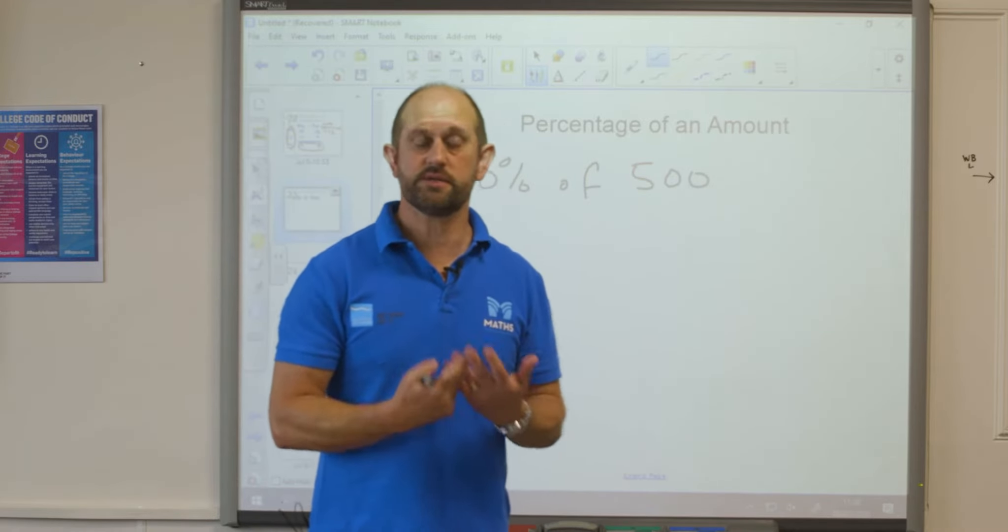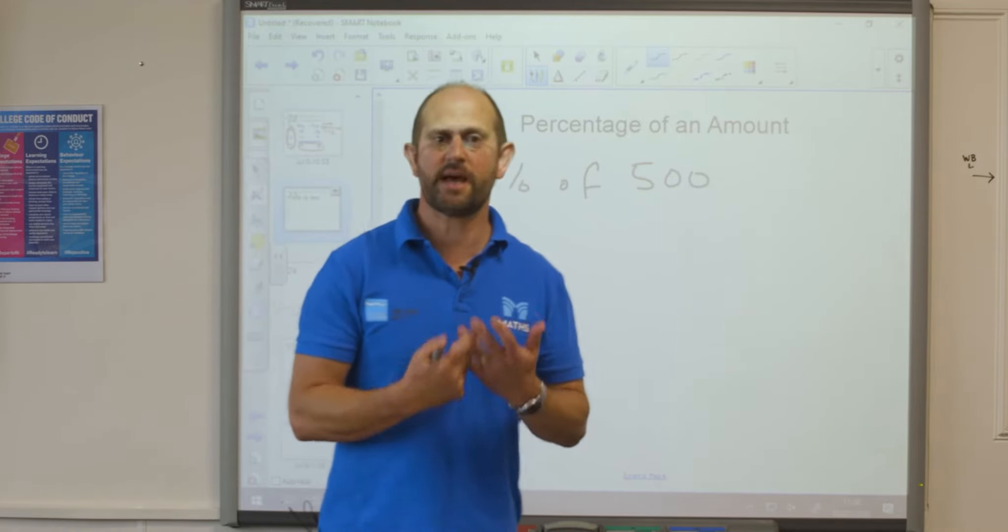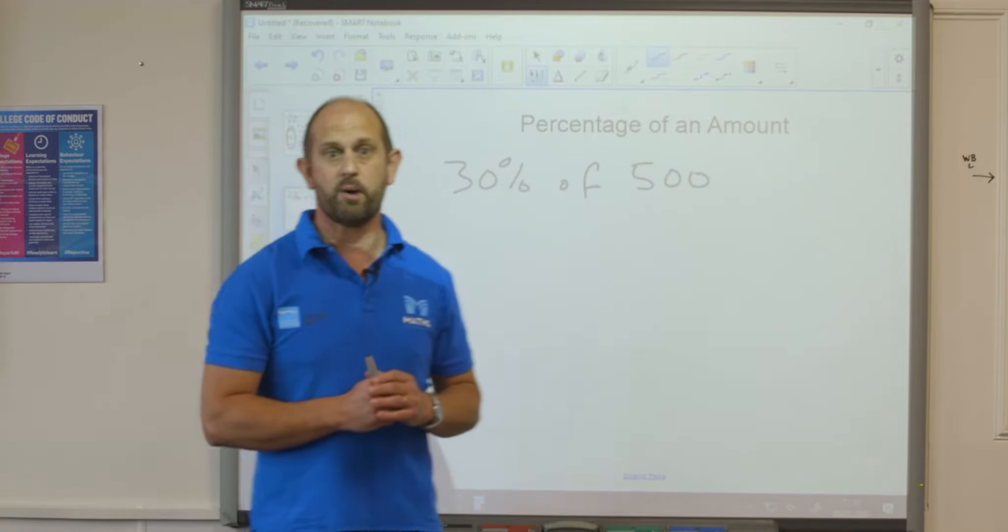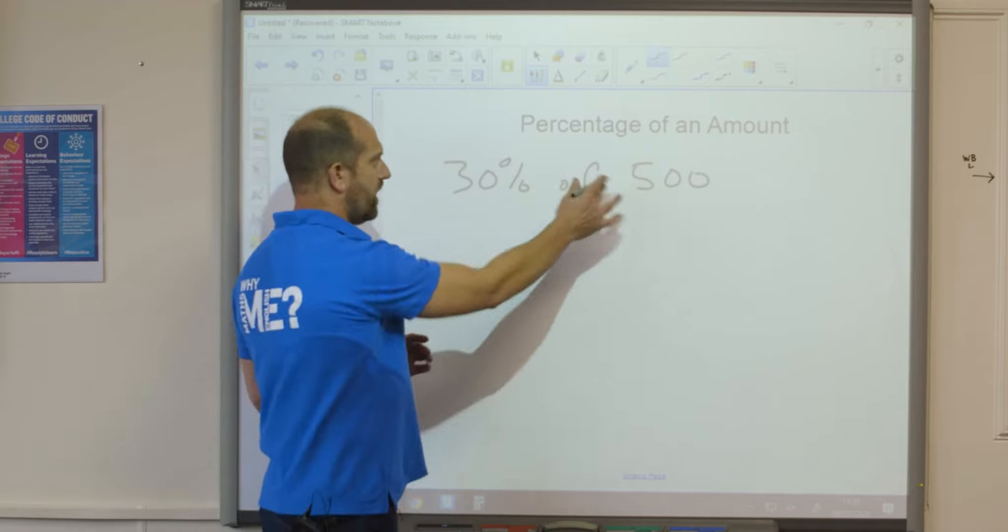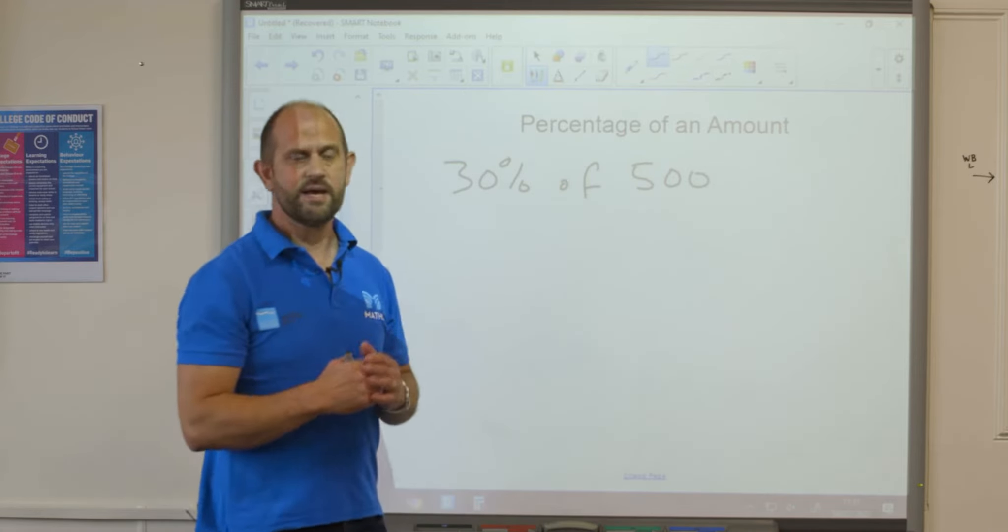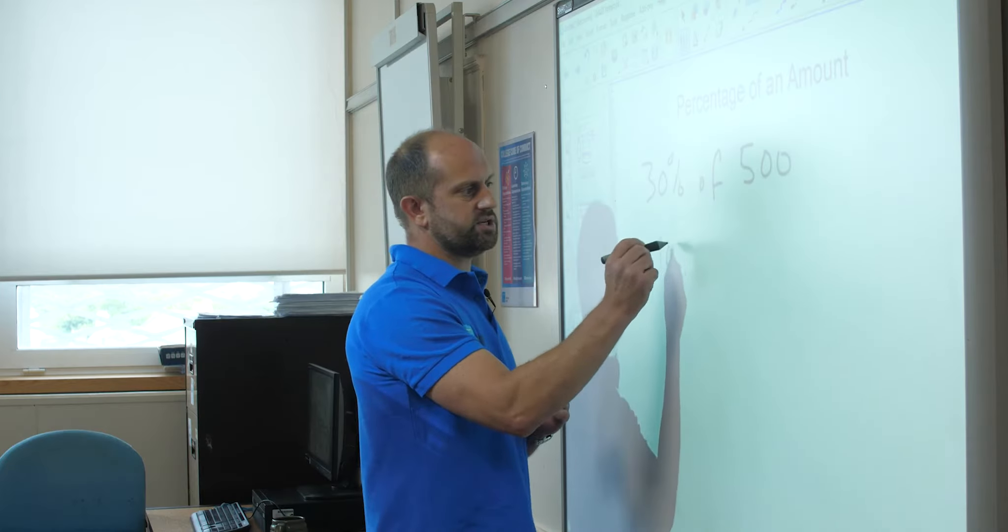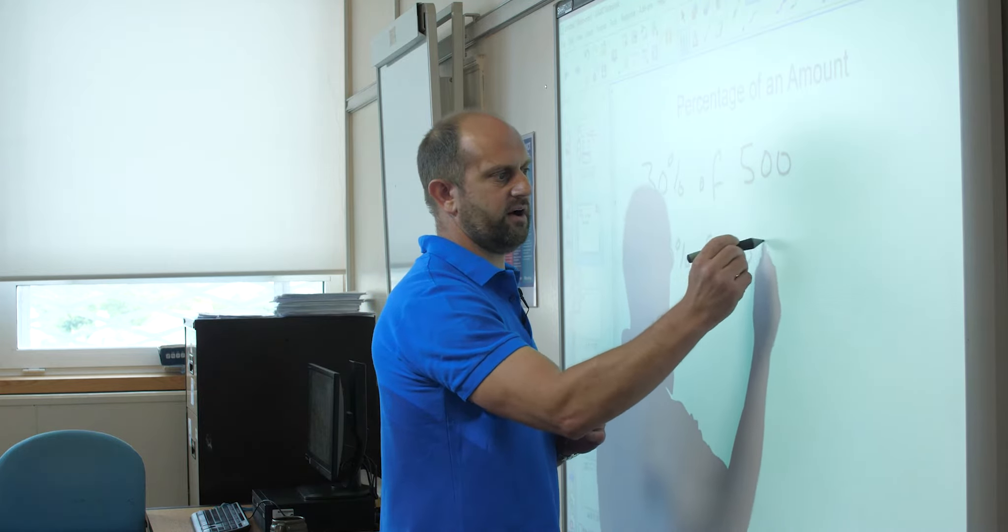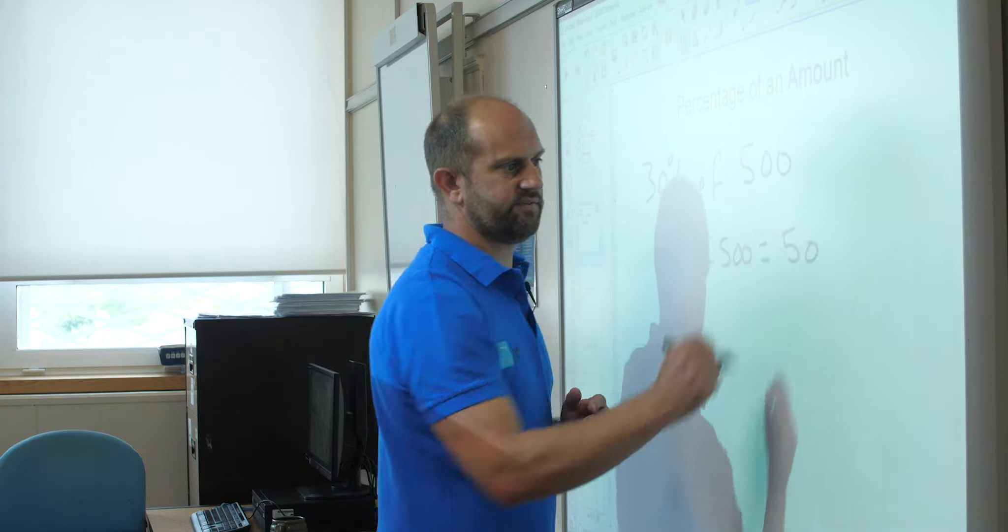The first thing and the easiest thing to do is to find 10%. To find 10% of a number all I need to do is divide 500 by 10. So 500 divided by 10 is 50. So 10% of 500 is 50.